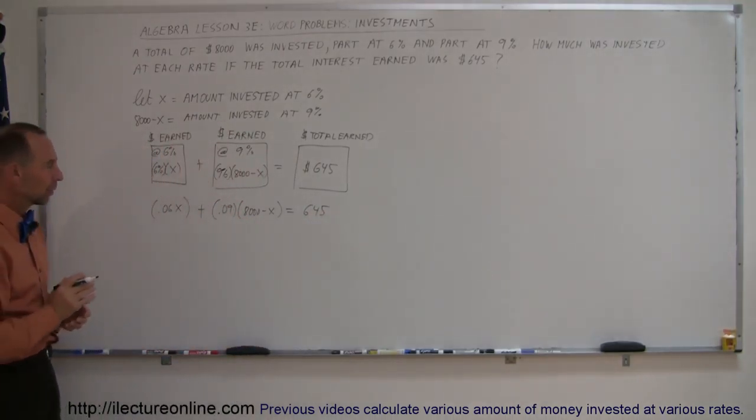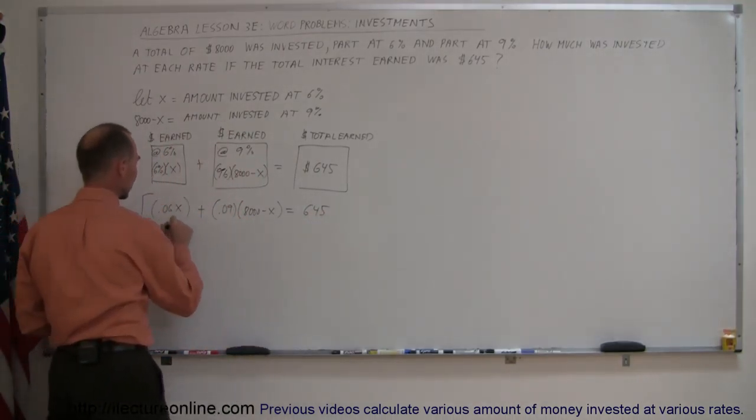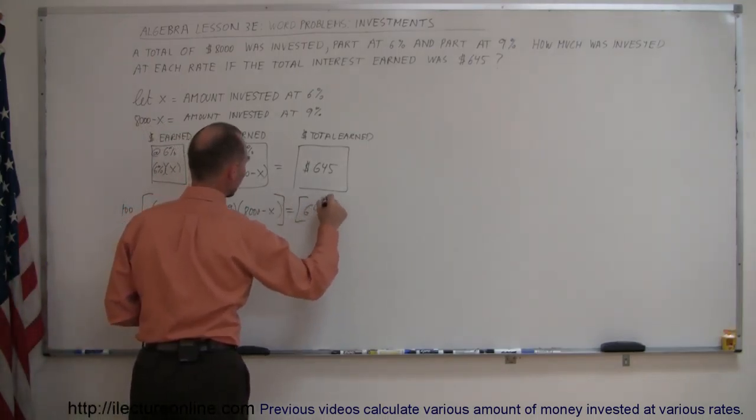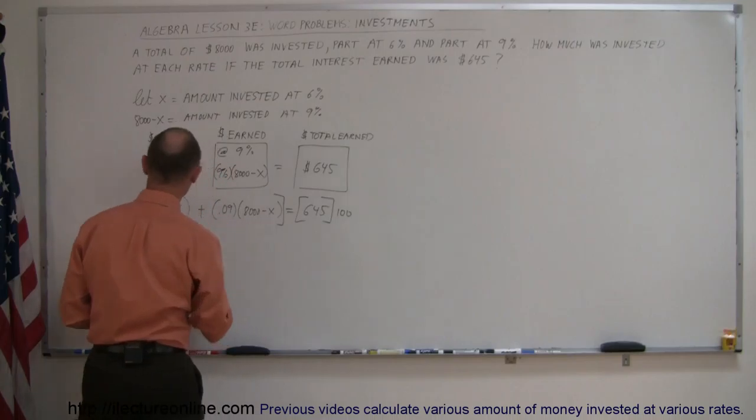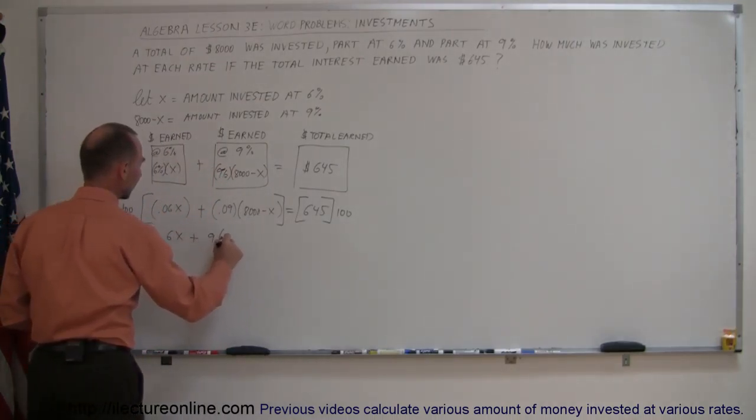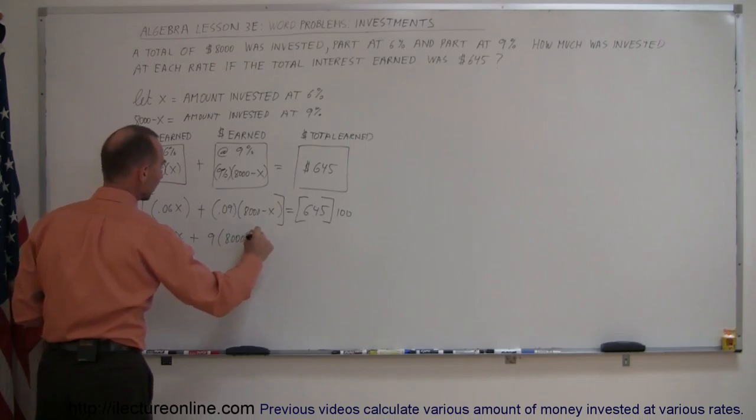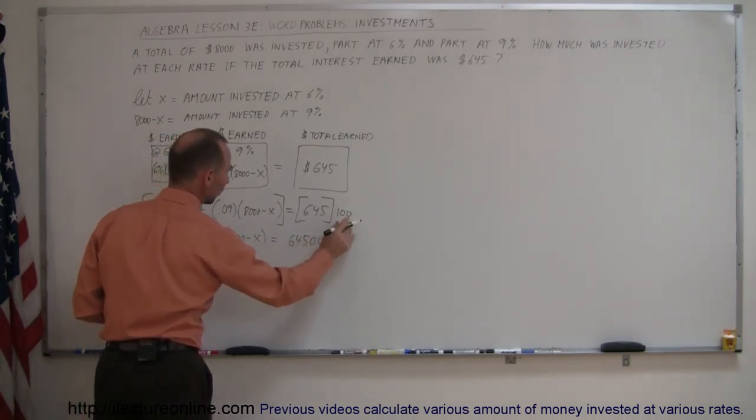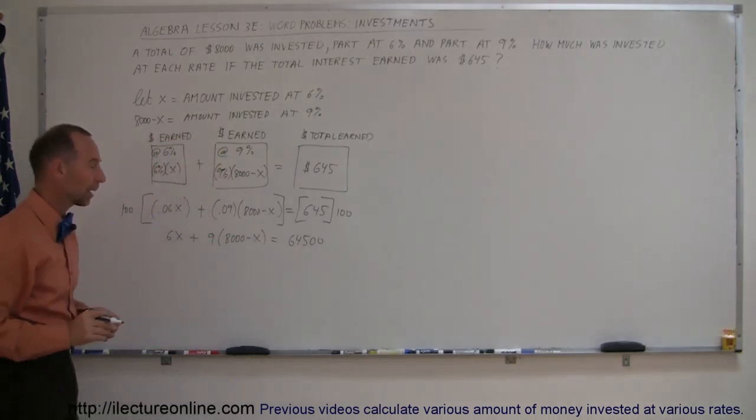Again, we have to get rid of the decimal places, which means we're going to multiply the left by 100 and the right by 100. When we do that, we get 6X plus 9 times 8,000 minus X is equal to 645 with two zeros. Simply add two zeros when you multiply by 100.